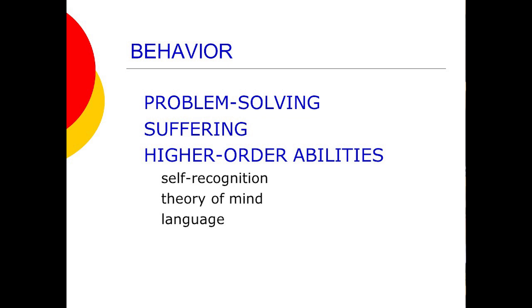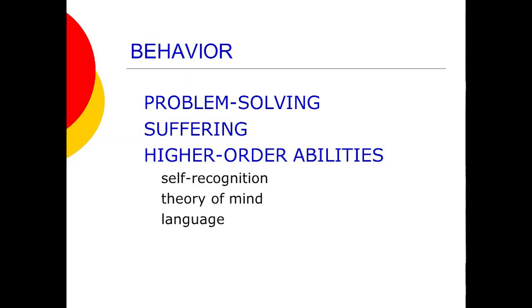The remaining criteria are appropriate to higher-order theories. We're going to look today at how specific behavioral criteria exhibit certain kinds of higher-order abilities. We'll look at three different kinds: self-recognition, theory of mind, and language as abilities that animals may or may not have that would indicate a particular kind of theory of consciousness.